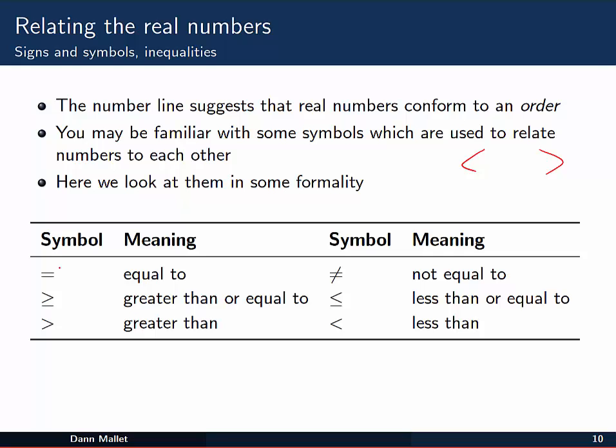So we've got six of them. The easiest one to think about is the equal to symbol, which I'm sure we've all seen. One that you might not have seen is the equal symbol with a line through it, a stroke through it. And that just means the thing on the left and the thing on the right are not equal to each other.